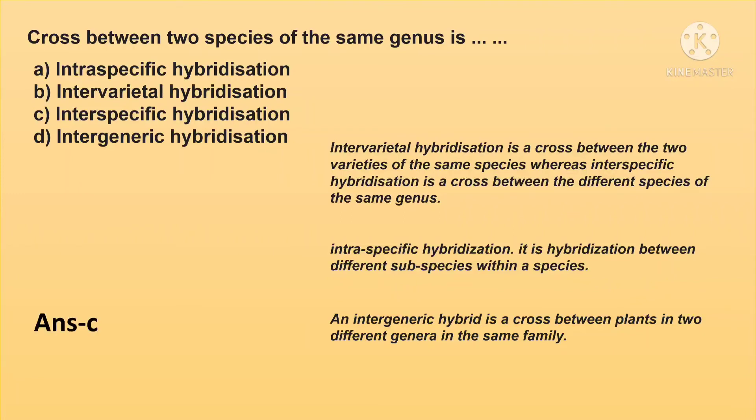So the cross between two species of the same genus is C, i.e. interspecific hybridization.